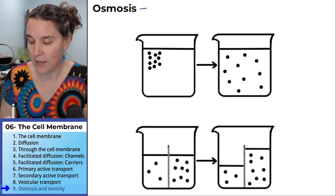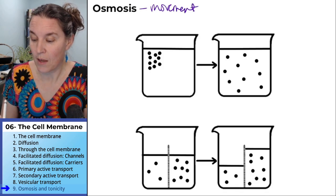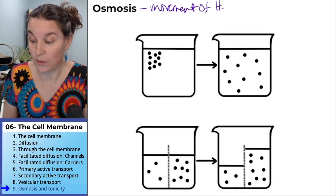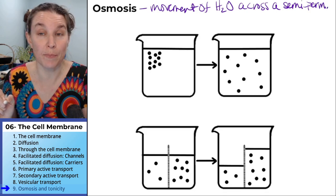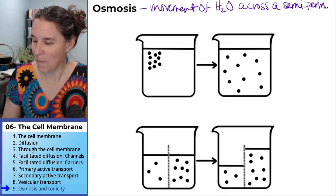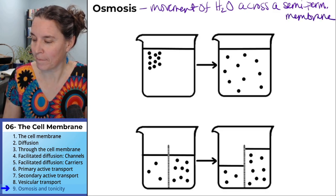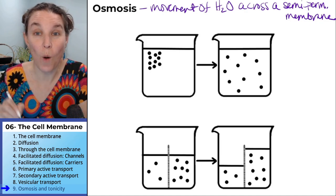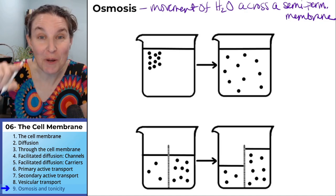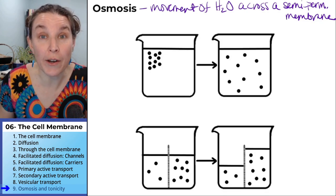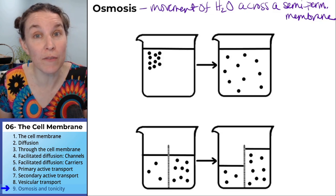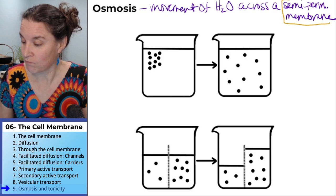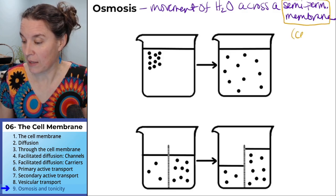We're going to say osmosis is the movement of water across a semi-permeable membrane. I'm going to abbreviate that. Give me an example of a semi-permeable membrane. Like the cell membrane.